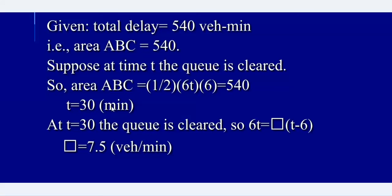So t equals 30 minutes. At t equals 30 minutes, the queue is cleared, so 60 should equal the service rate multiplied by t minus 6. Therefore, the service rate should be 7.5 vehicles per minute.